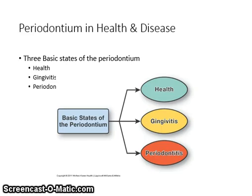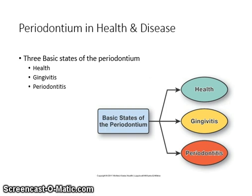The periodontium exists in three basic states. In the absence of disease, the periodontium is healthy. Pathogenesis is a sequence of events that occur during the development of a disease or abnormal condition. Periodontology deals with the events that occur during the development of periodontal disease. Periodontal disease is a bacterial infection of the periodontium. There are two types of periodontal disease: gingivitis and periodontitis.